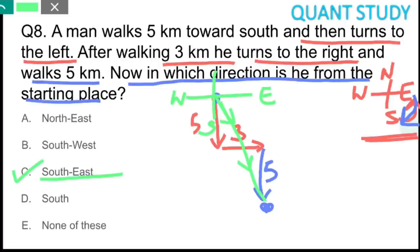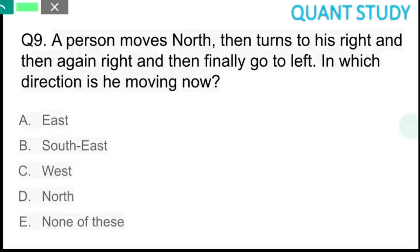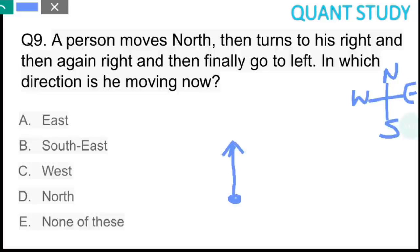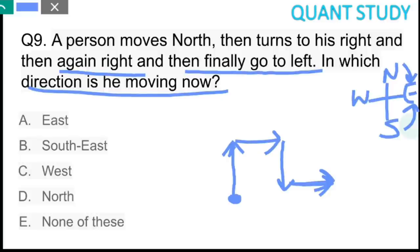Question 9: A person moves towards north, then turns right — going east. Then takes another right turn — going south. Then takes a left turn — from south, anti-clockwise brings us to east. The question asks in which direction he is finally moving. He is moving towards east. The answer is option A, east.